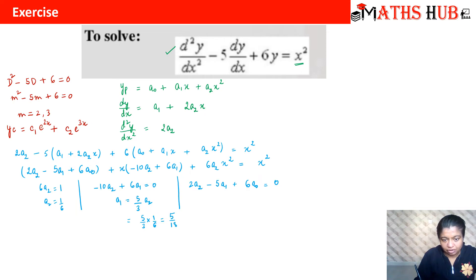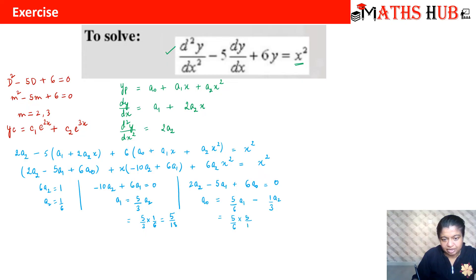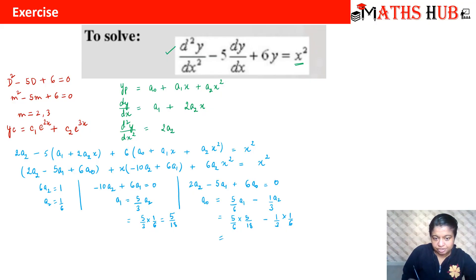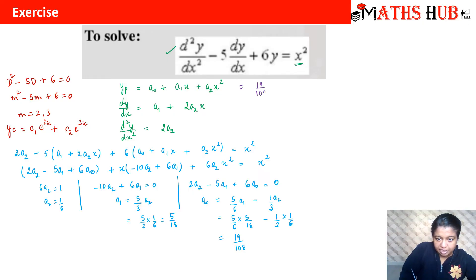For the constant terms, 2a2 − 5a1 + 6a0 = 0, so a0 = (5a1 − 2a2)/6. Substituting, a0 = (5/6)·(5/18) − (1/3)·(1/6), which comes out to be 19/108. So the particular solution is yp = 19/108 + (5/18)x + (1/6)x².